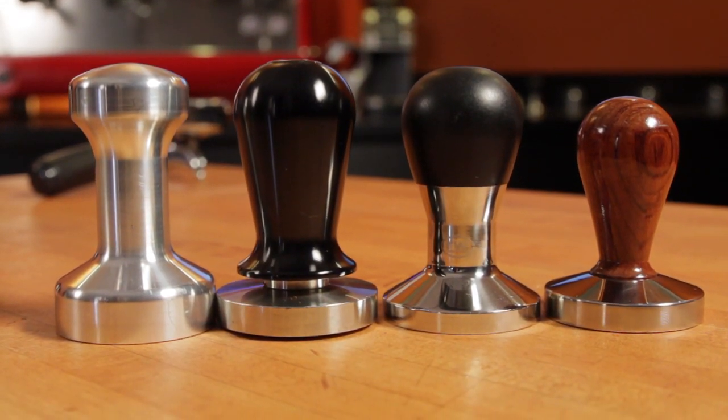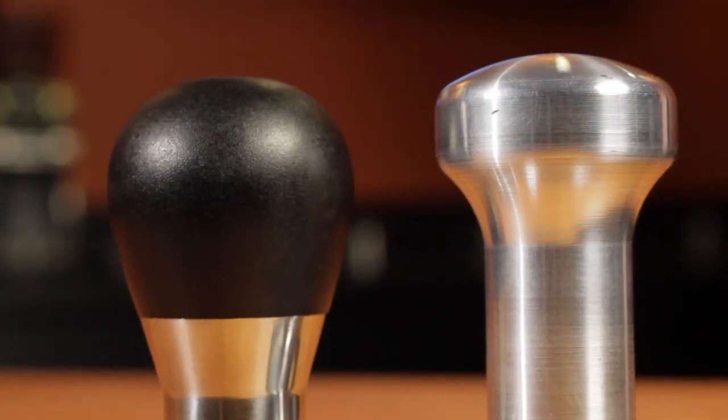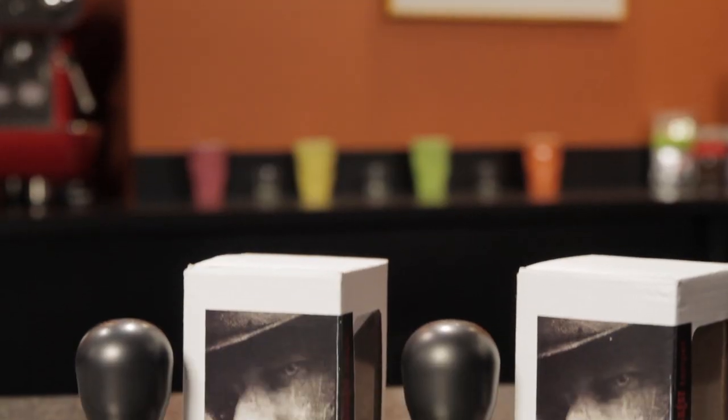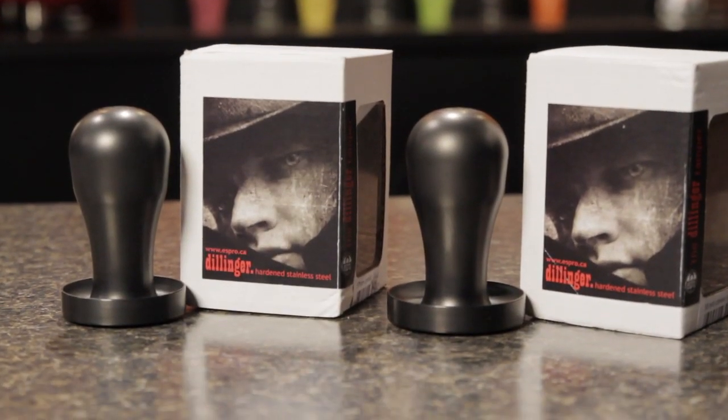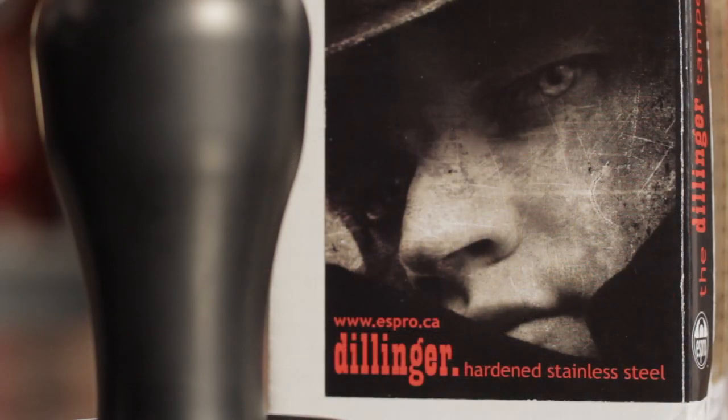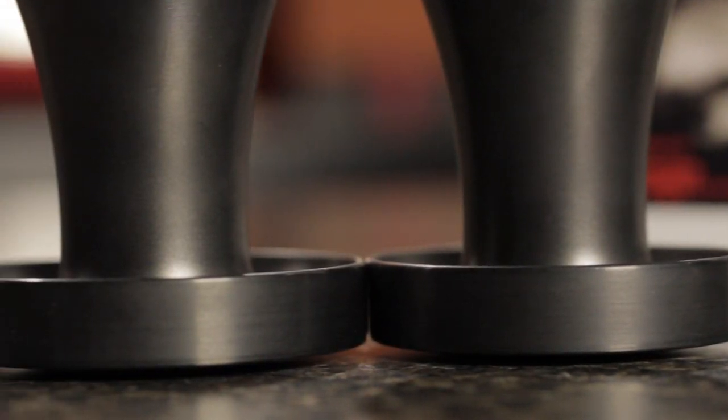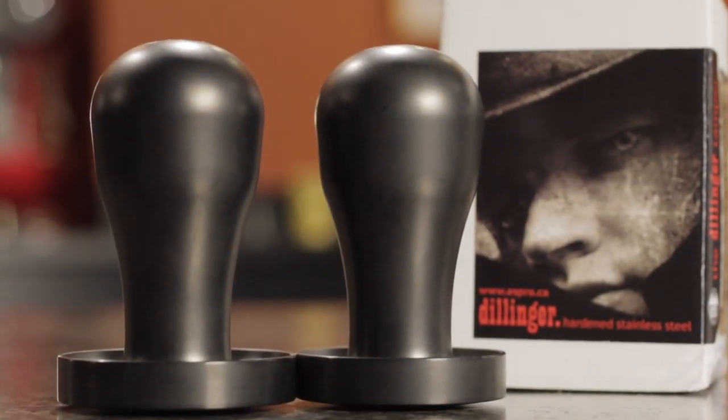If top of the line is your thing, check out one of our favorites, the indestructible Espro Dillinger Black Diamond. It's five times harder than regular steel, is large in the palm, and has an ergonomic taper to a unique base-shaped bridge with a variation on the typical thumb placement for fine control of tamping pressure.